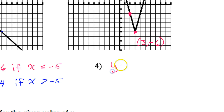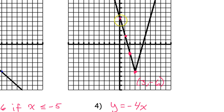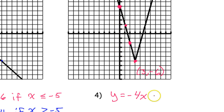What's the y-intercept? It's right here — counting 1, 2, 3, 4, 5, 6. So the y-intercept is 6, giving us negative 4x plus 6. That's the left branch.